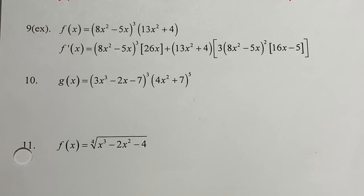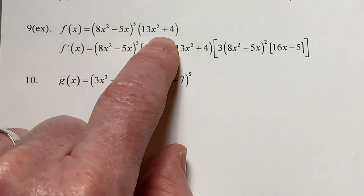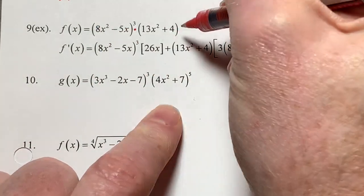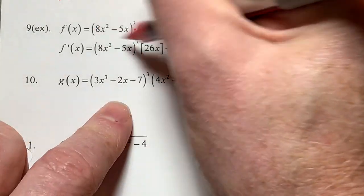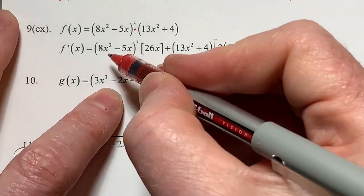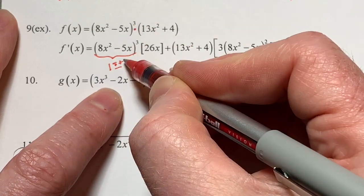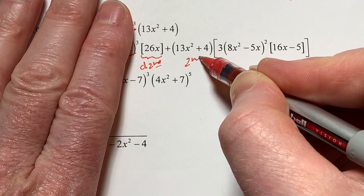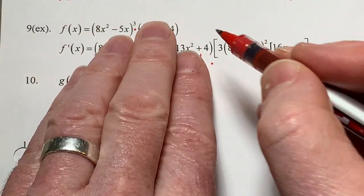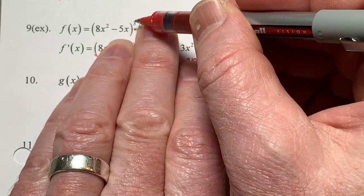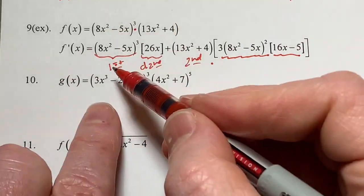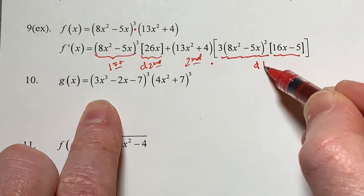Number 9: I've got a power on this part but a separate function. What's bringing all of this together? The product rule. The three is not on everything — it's just part of one function. So I'm going to do a product: first times derivative of the second, plus second times derivative of the first. The derivative of the second is a power-chain combo: three blah squared times the derivative of the inside, which is 16x minus 5. So first d-second plus second d-first.